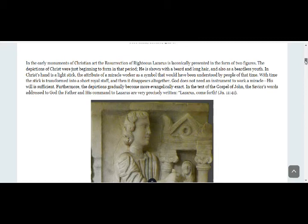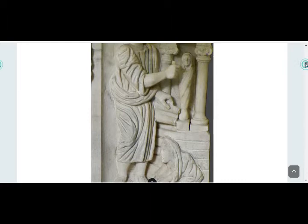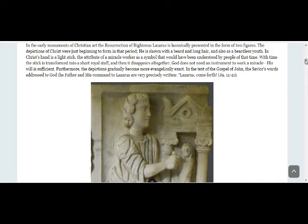In the early monuments of Christian art, the resurrection of Lazarus is laconically presented in the form of two figures. The depictions of Christ were just beginning to form in that period — he is shown with a beard and long hair, or also as a beardless youth. In Christ's hand is a light stick, a tribute to miracle workers as a symbol understood by people at the time. With time, the stick is transformed into a short staff, a royal staff, and then it disappears altogether, because God does not need an instrument to work a miracle — his will is sufficient.